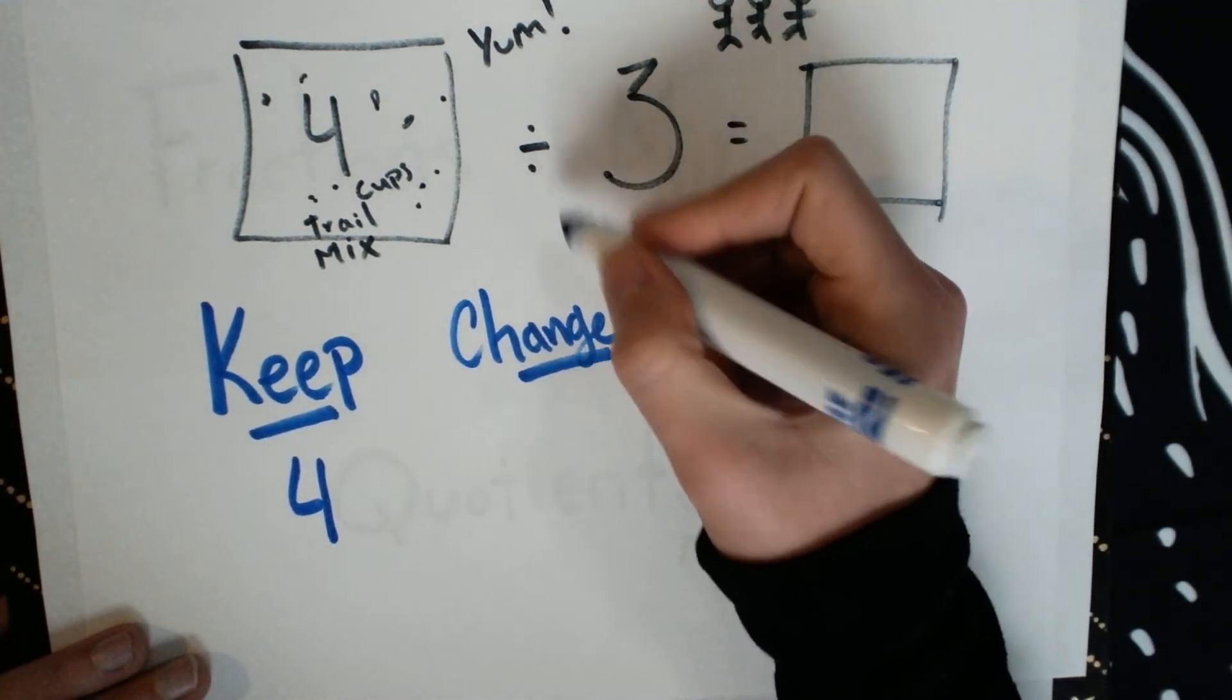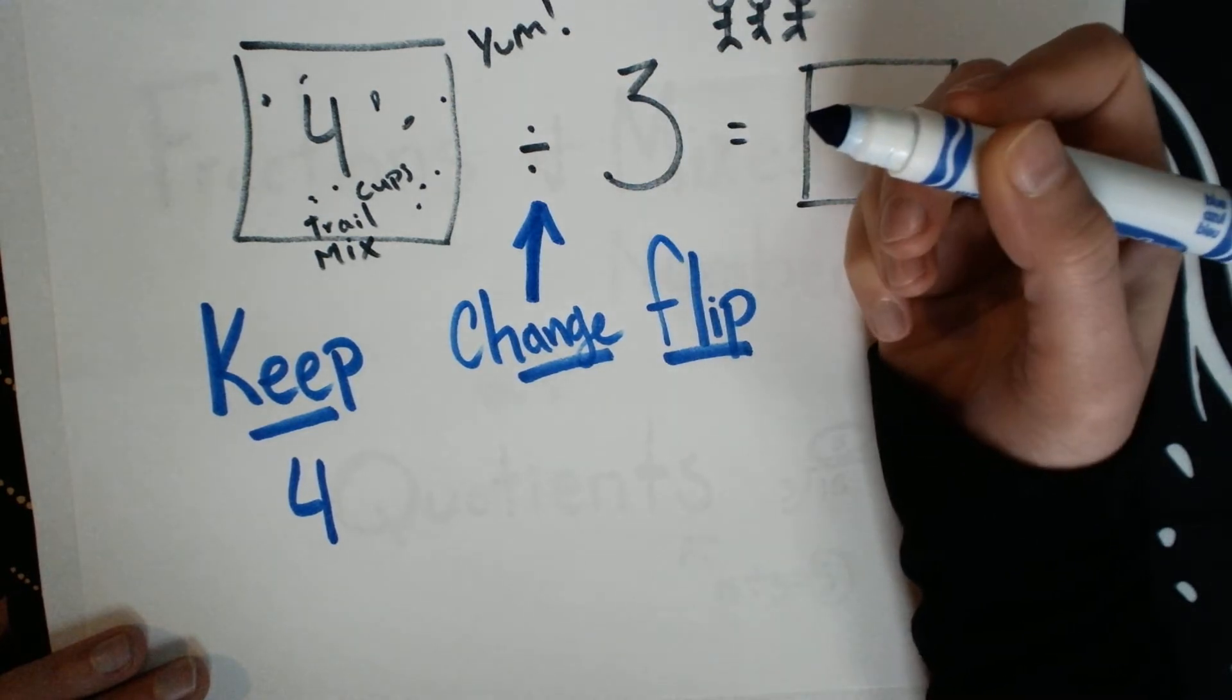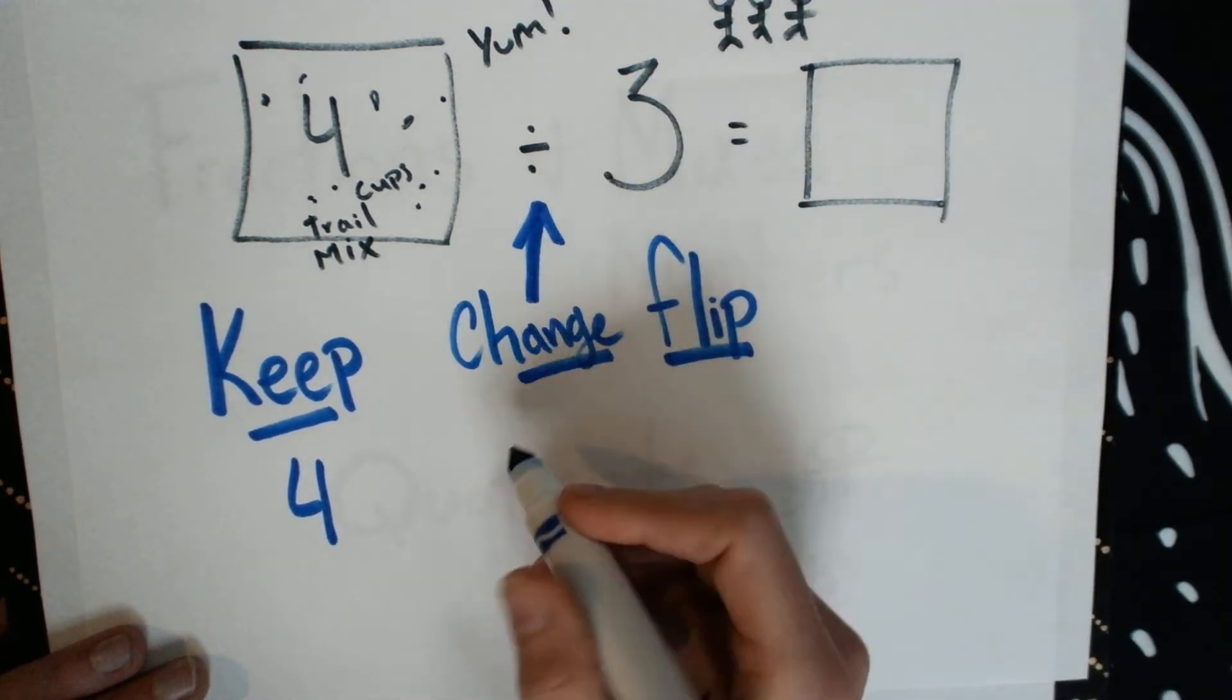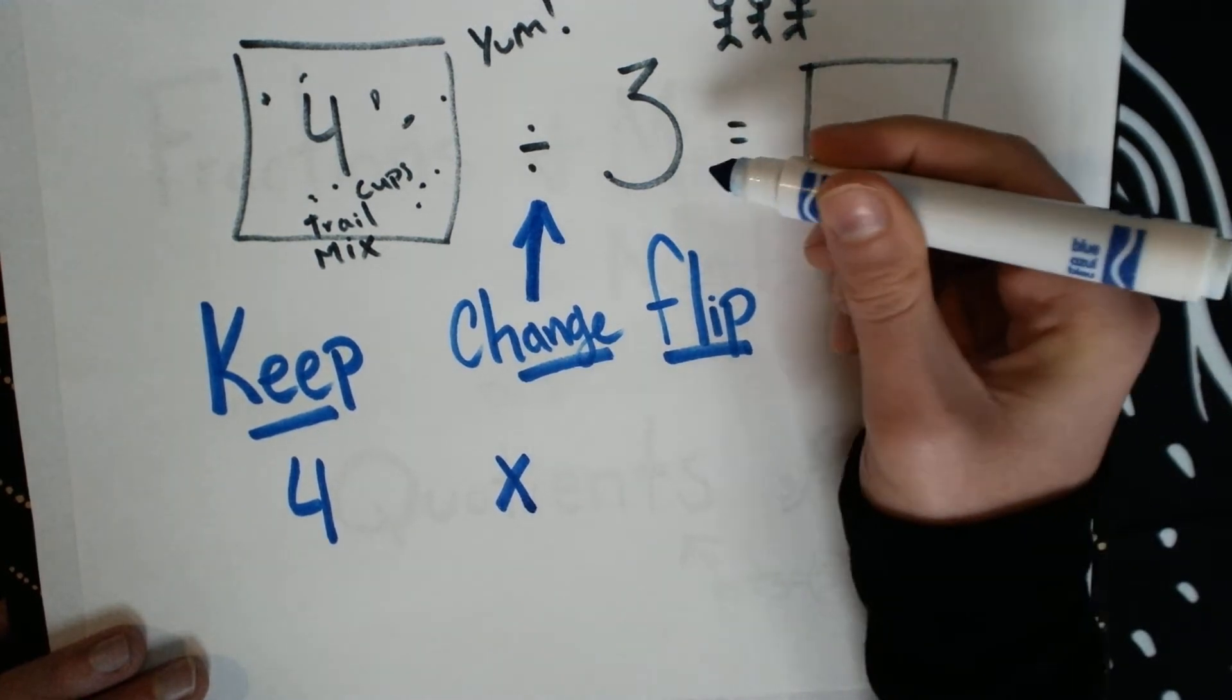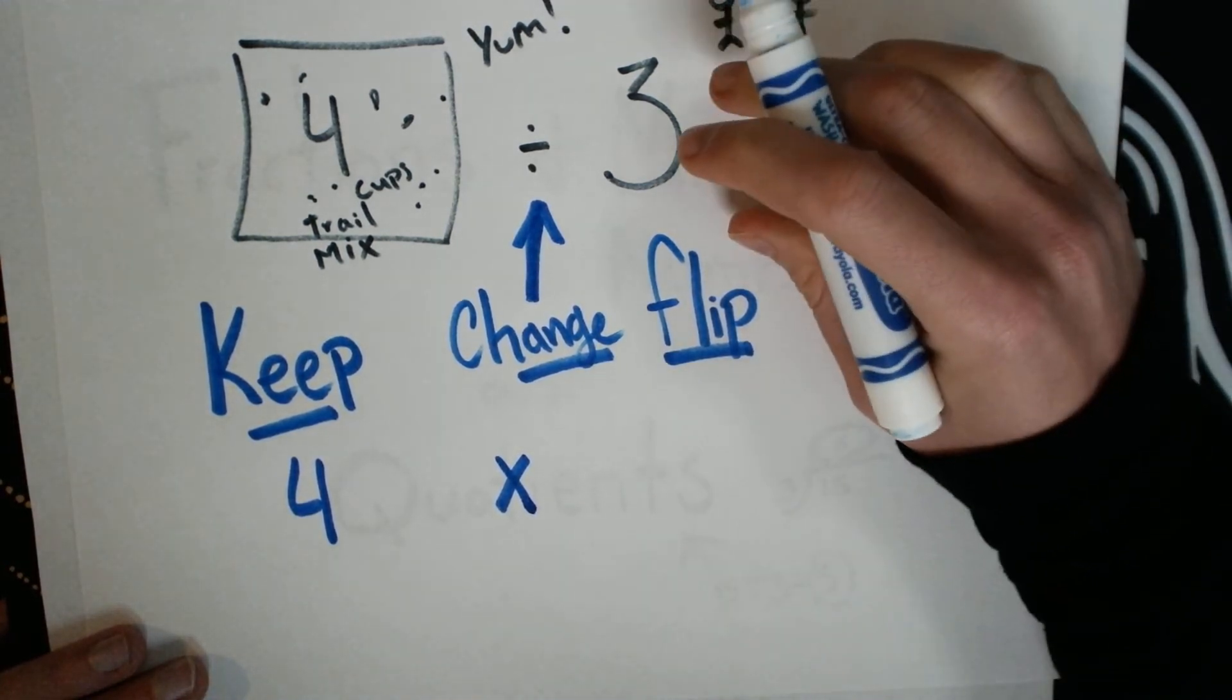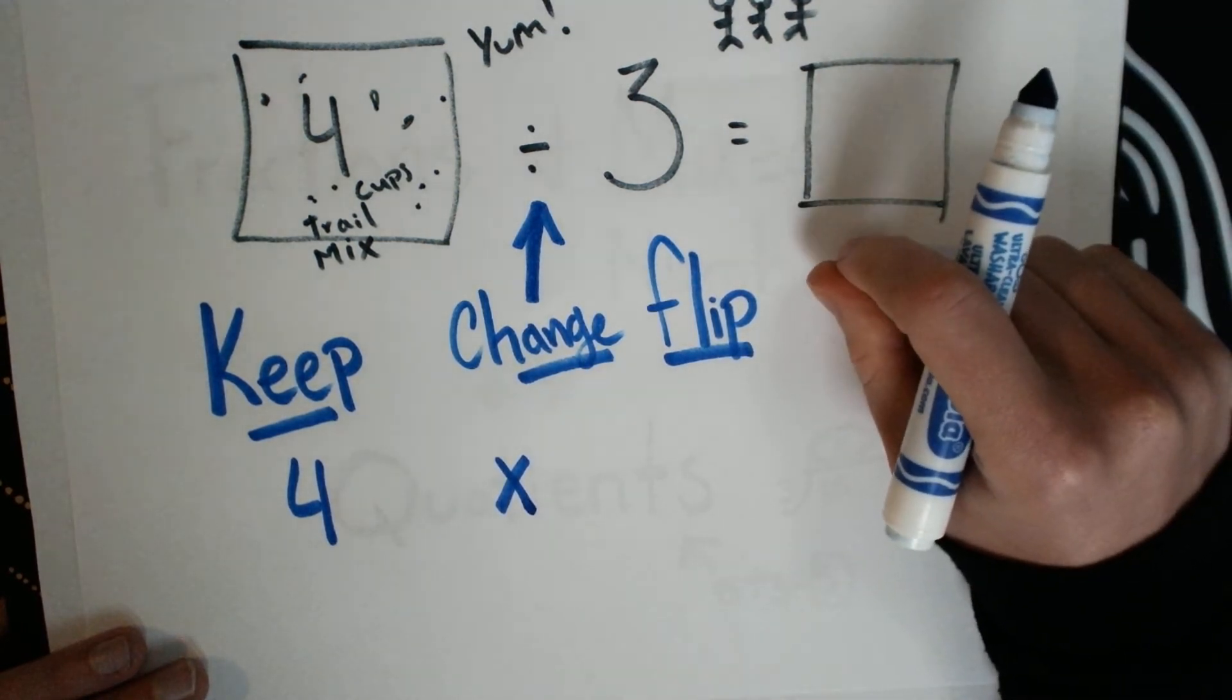We're going to change that division symbol. We're going to change it into multiplication. We're going to change that into a multiply symbol, and then we're going to flip this 3. But I don't mean just turn it upside down. I mean turn it into its reciprocal fraction.